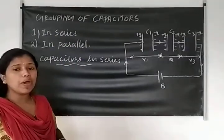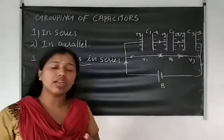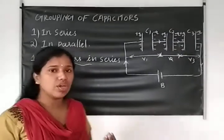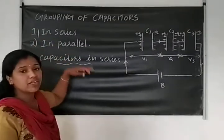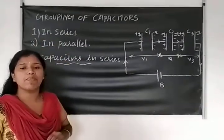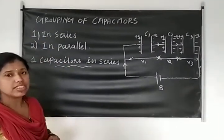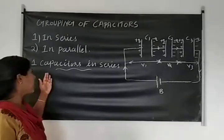Grouping of capacitors are in two ways. First one is in series. Second one is in parallel.